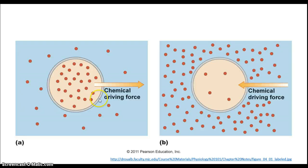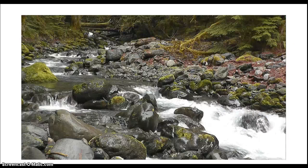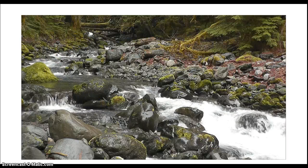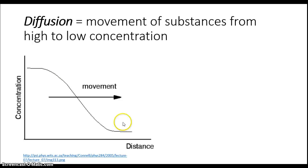Materials tend to move from where there are a lot of them to where there are fewer of them — for example, from inside to the outside. There is almost a chemical driving force that causes the movement of these materials, such as from outside to inside across the cell membrane. Just as water moves downhill, materials tend to move from high to low concentration. This movement is referred to as diffusion.